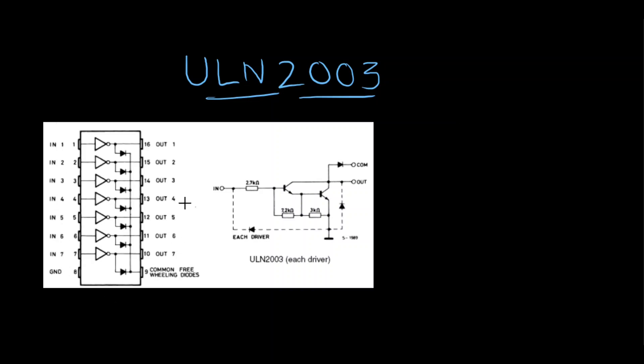ULN2003 is a 16-pin IC. You can see here it contains seven Darlington pair transistors. There are seven transistors. It has seven inputs for the transistors and seven outputs from the transistors.